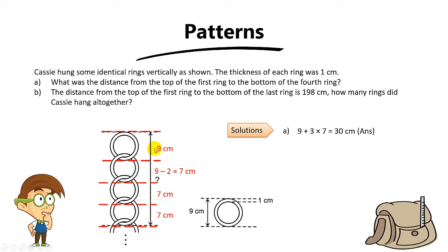It's basically just 9 plus 3 times 7. The 9 is referring to the first length, then plus 3 — which is the number of intervals. In this case, there are three 7s: 1, 2, and 3. So you take 9 plus 3 times 7, and the answer is 30cm.